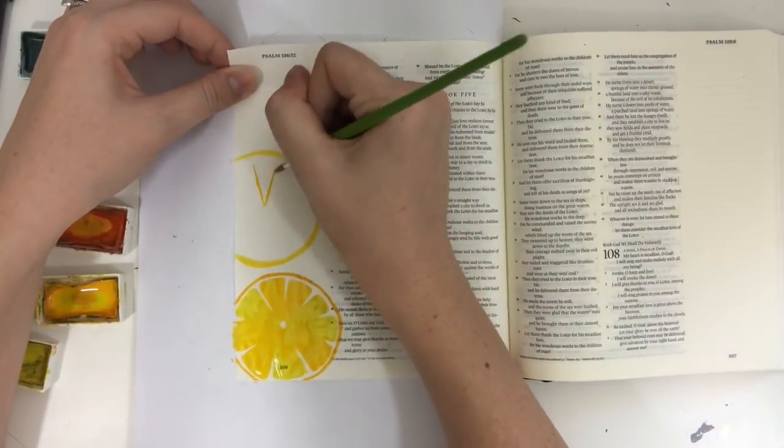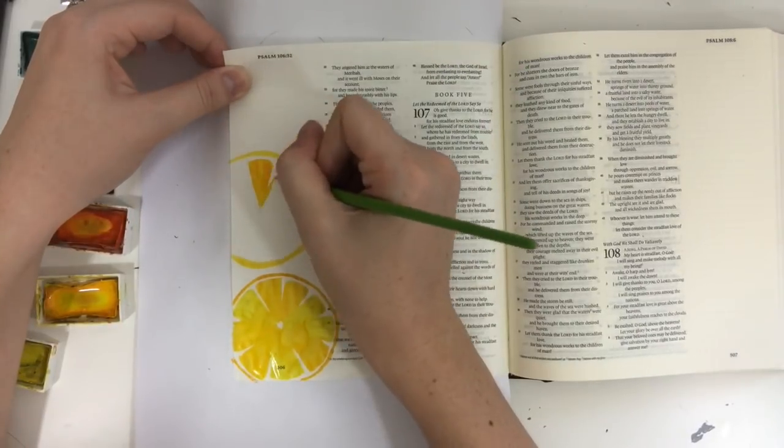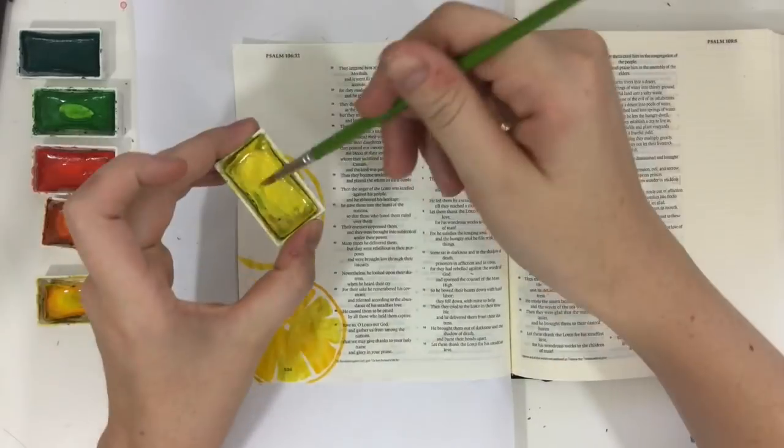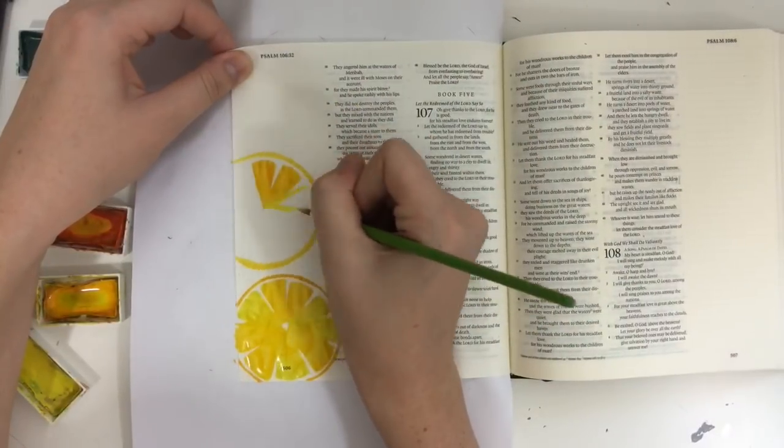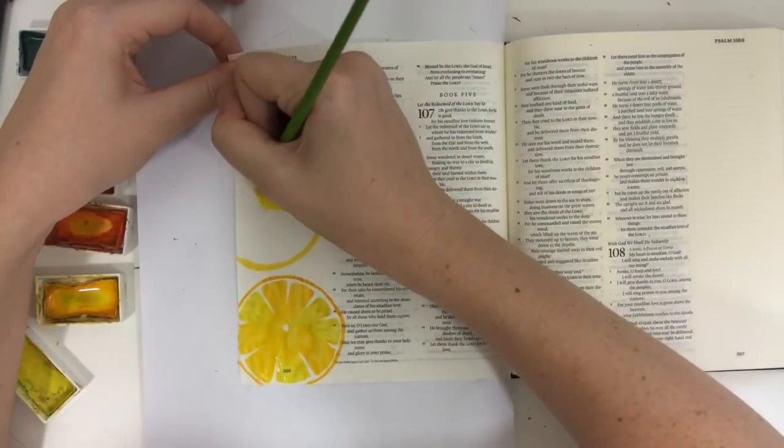If this is too complicated to freehand, you could totally mark your triangles beforehand also with the pencil. I just personally decided to freehand it thinking it would be faster. It might not have been.